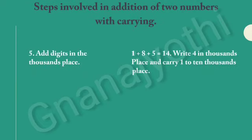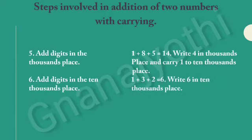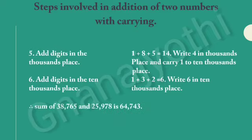Step 5: Add digits in the thousands place. The digits in the thousands place are 8 and 5 with Kari 1. If we add these, we get 14. Write 4 in thousands place and Kari 1 to tens thousands place. Step 6: Add digits in the tens thousands place. The digits in the tens thousands place are 3 and 2 with Kari 1. If we add this, we get 6. Write 6 in tens thousands place. Therefore, the sum of 38,765 and 25,978 is 64,743.